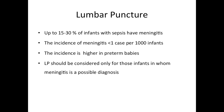Coming to lumbar puncture, which is commonly performed as part of neonatal sepsis evaluation — 15–30% of babies with sepsis are supposed to have associated meningitis, with an incidence of around 1% among thousand live births. Incidence is higher in preterm babies. LP should always be considered whenever meningitis is a possible diagnosis. It is more common with late-onset sepsis, so as part of late-onset sepsis evaluation, LP should be performed almost always. For suspected early-onset sepsis, LP should be considered when meningitis is a possibility, if there is a positive blood culture, or if other clinical parameters suggest high risk for meningitis.